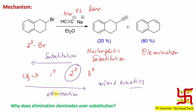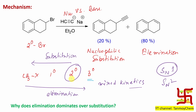You may ask: in substitution, we have SN1 versus SN2. For SN2, the order is favored: methyl > primary > secondary > tertiary. But for SN1, the opposite is observed — tertiary is more efficient, secondary is moderate. So why am I not considering SN1 here?